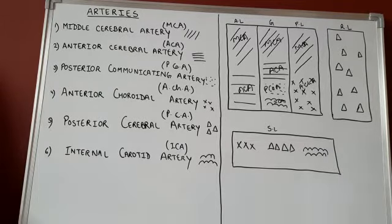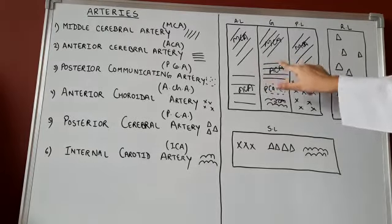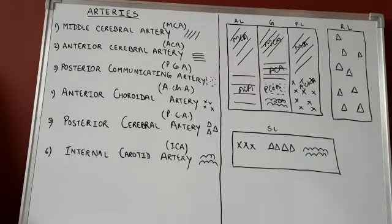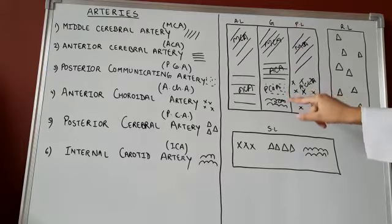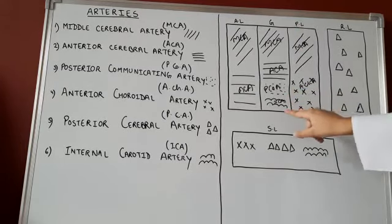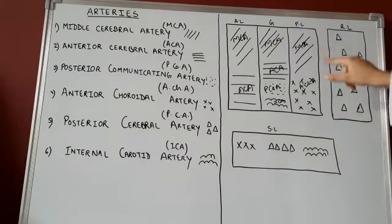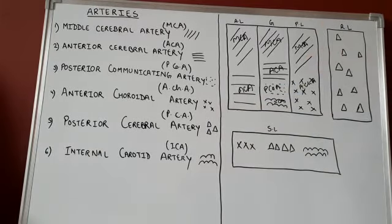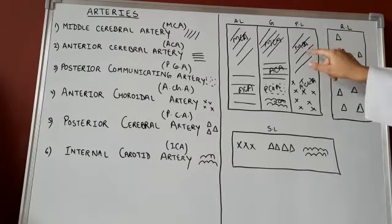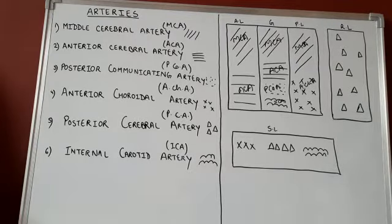Once again, in brief: the anterior limb, genu, and posterior limb are all supplied by the middle cerebral artery. The anterior limb and genu are supplied by the anterior cerebral artery. In addition, the genu is supplied by the posterior communicating artery and the internal carotid artery. Talking about the posterior limb, it is supplied by the middle cerebral artery and the anterior choroidal artery. One important thing to remember is that the middle cerebral artery supplying the posterior limb is referred to as the artery of cerebral hemorrhage, or Charcot's artery of cerebral hemorrhage.